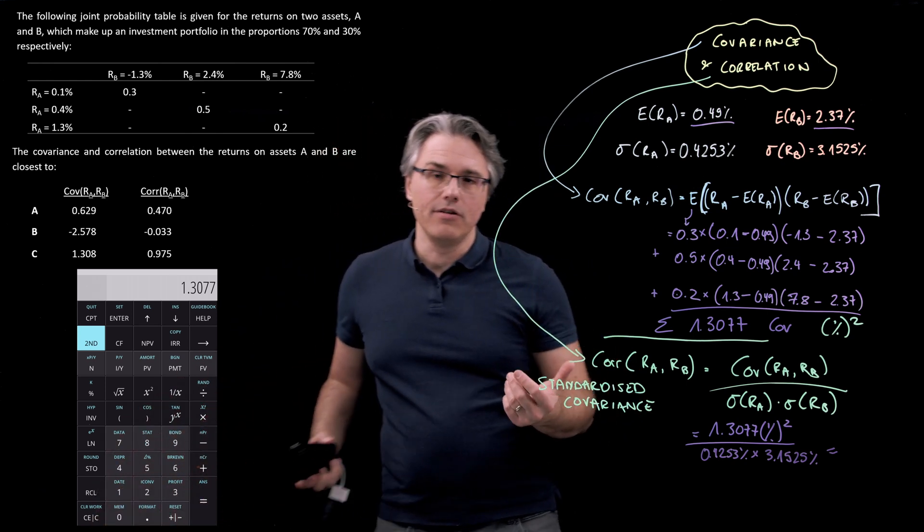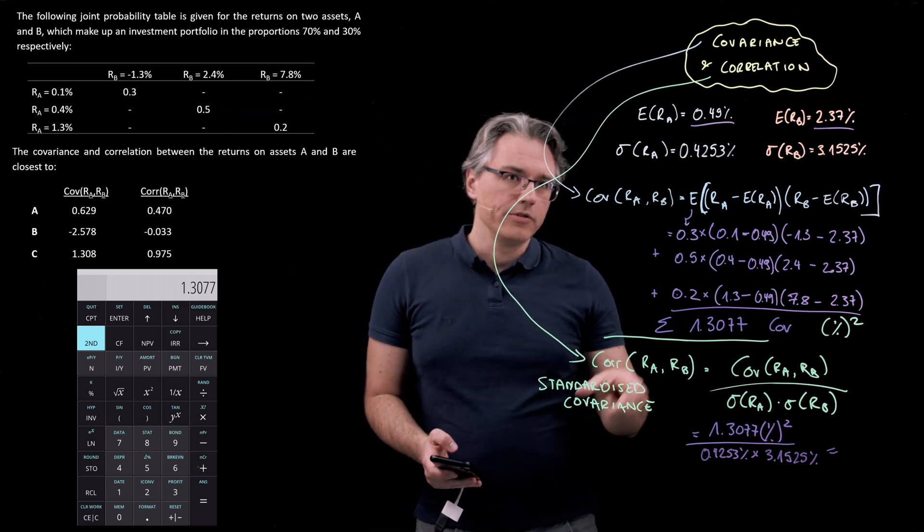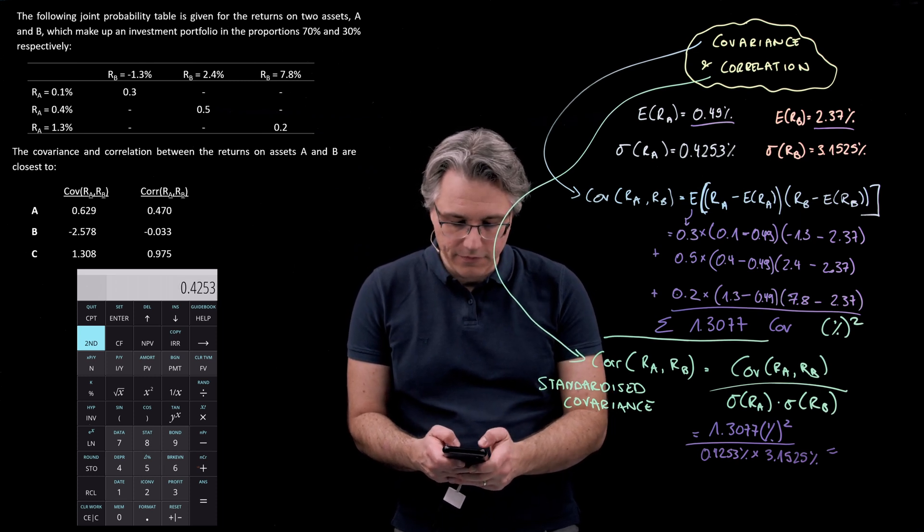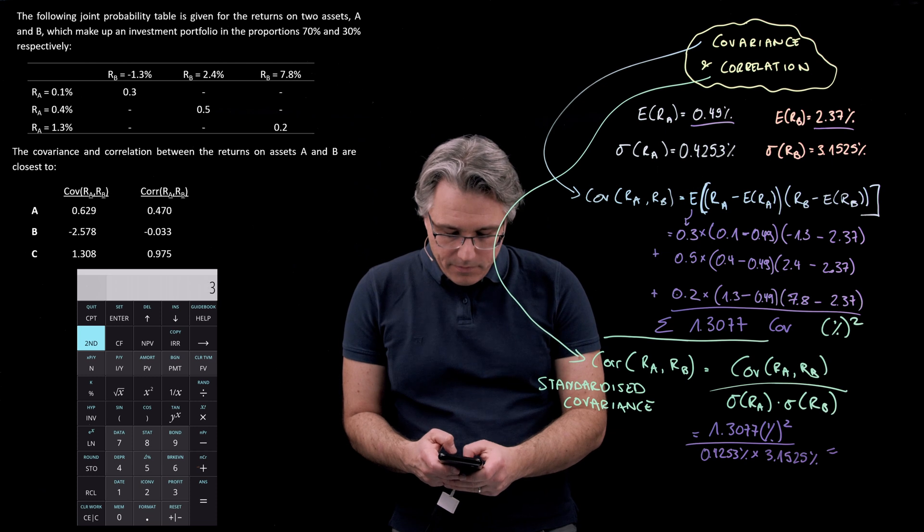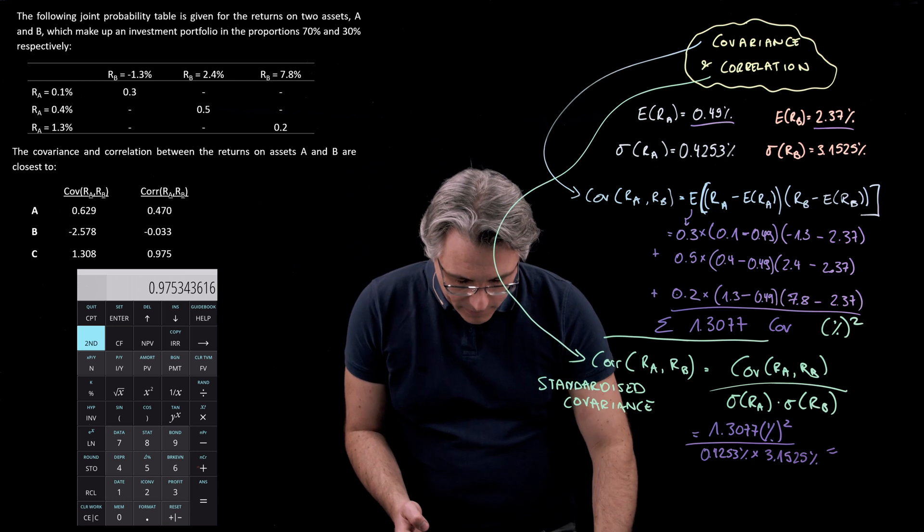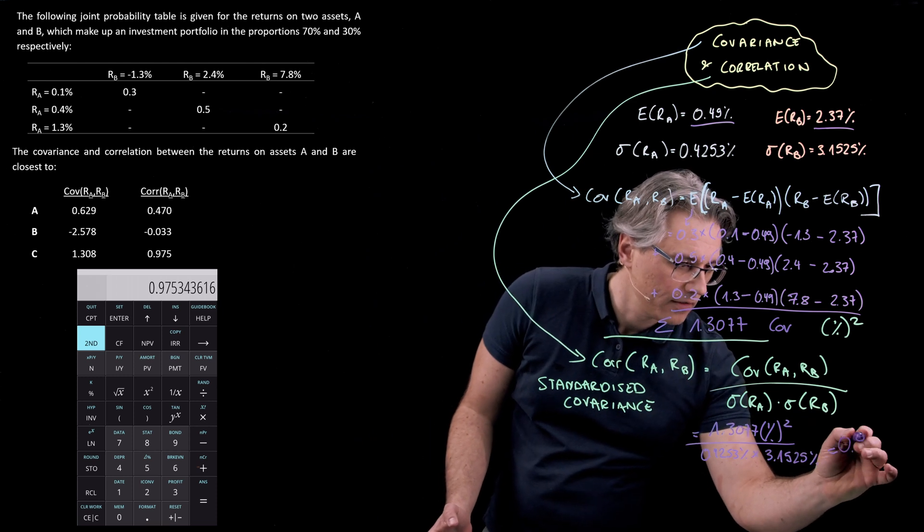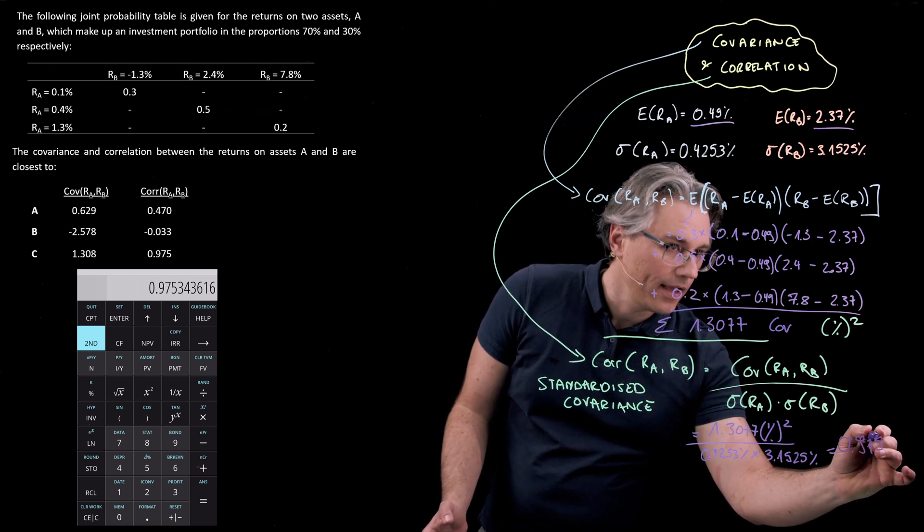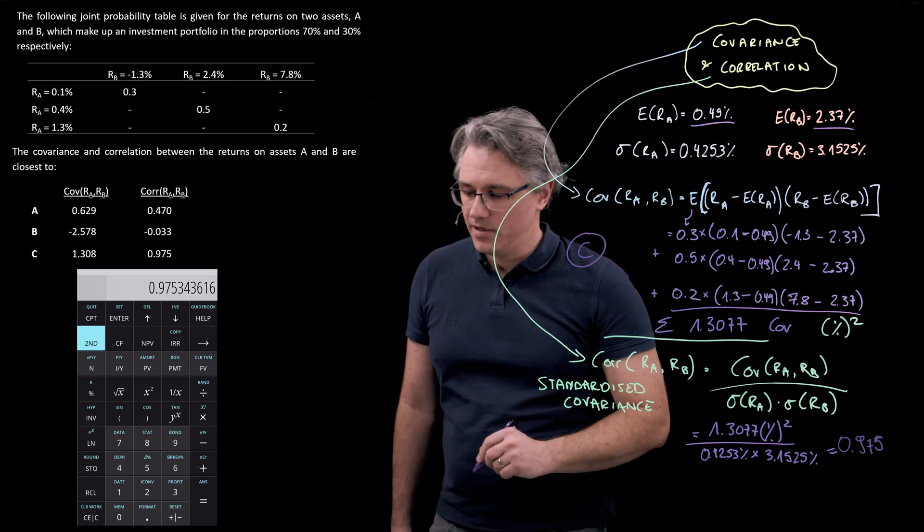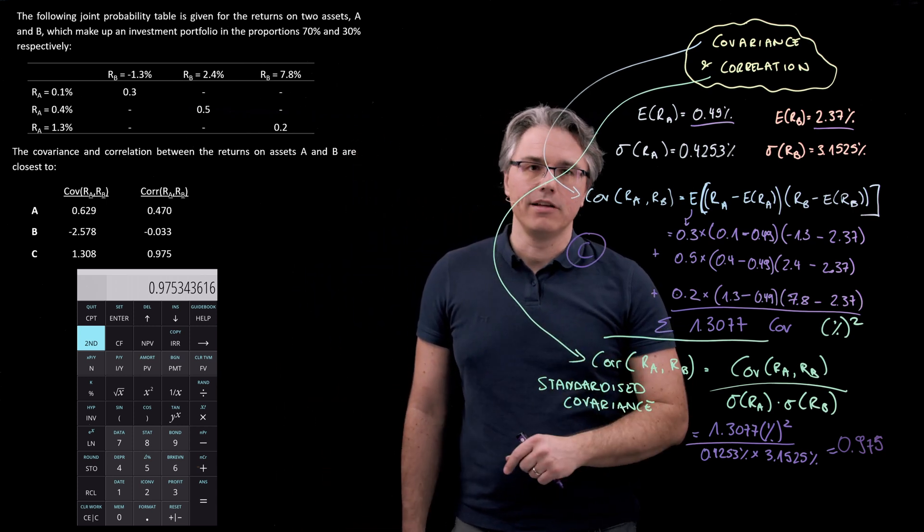Let's do the relevant computation on the calculator. 1.3077, which is what I've got already from the computation of covariance. Divide this by open bracket 0.4253 multiplied by 3.1525, close bracket. It gives a result of 0.975. And that once again corresponds very nicely with answer C to this problem which has the right level of covariance and the right level of correlation.